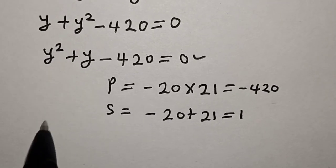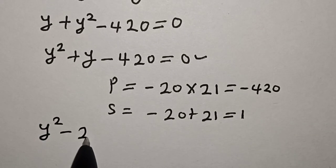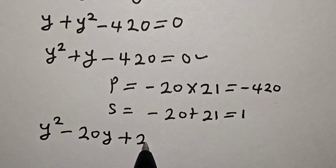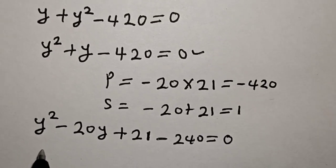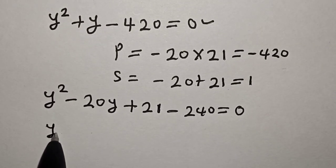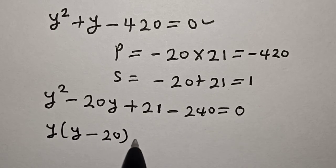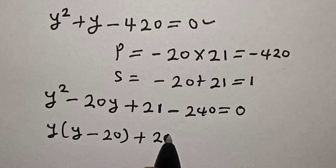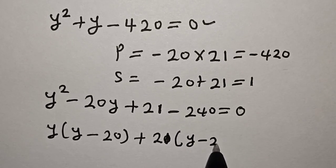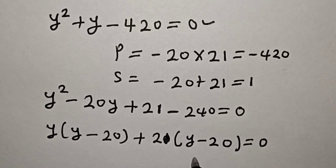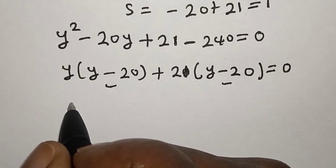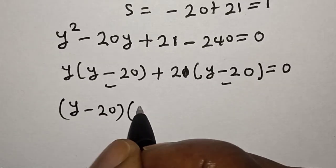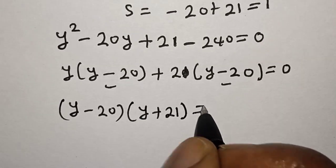Substituting, we have y squared minus 20y plus 21y minus 420 is equal to 0. This factors as y times (y minus 20) plus 21 times (y minus 20) equals 0. Since (y minus 20) is common, we bring it out to get (y minus 20)(y plus 21) equals 0.